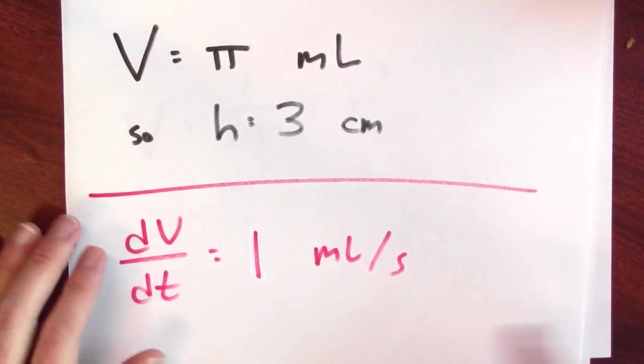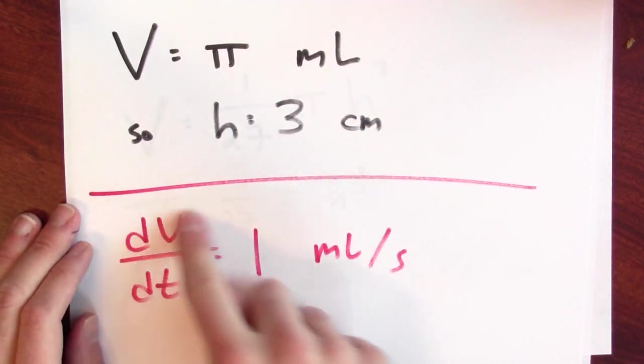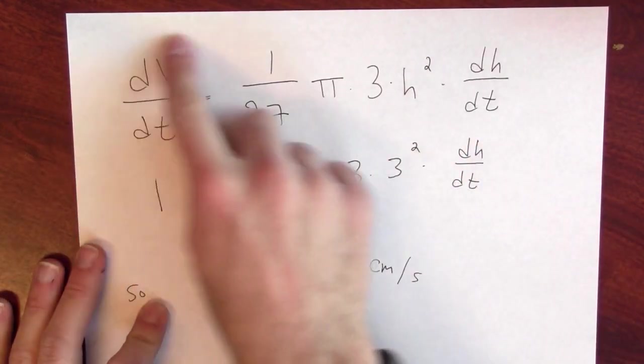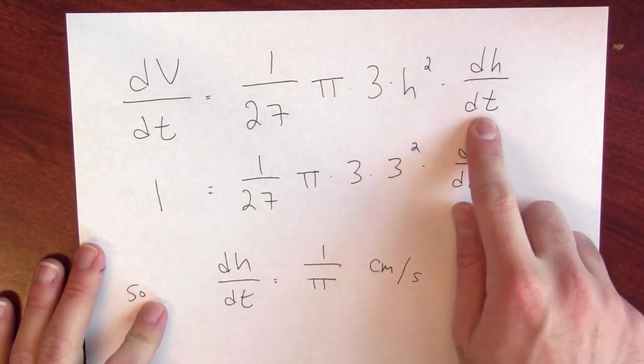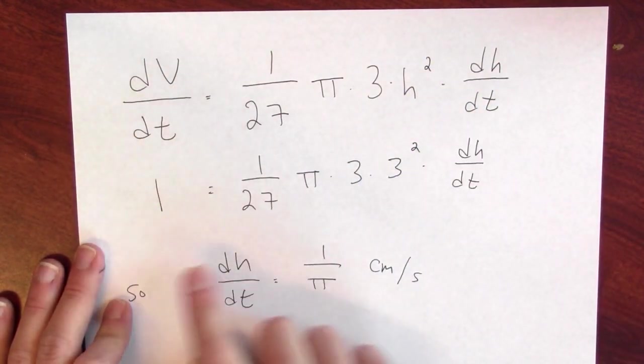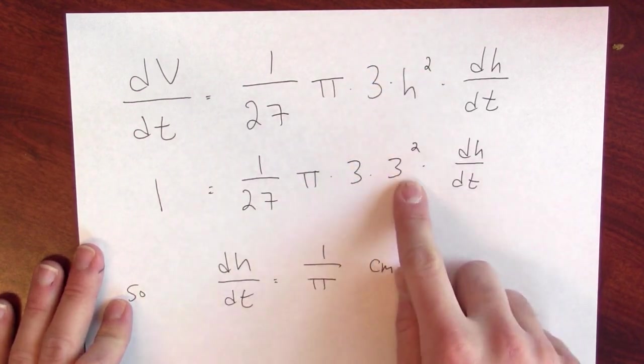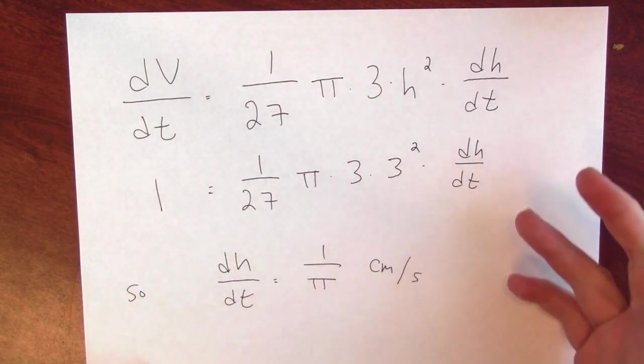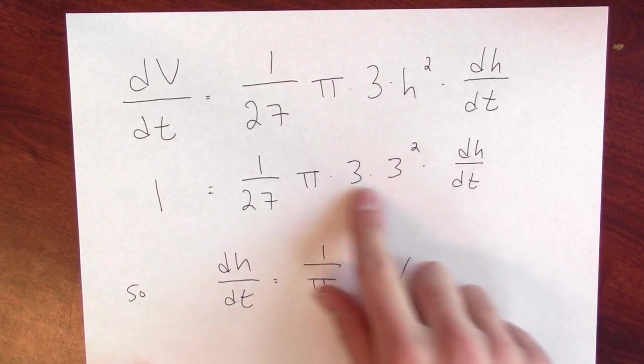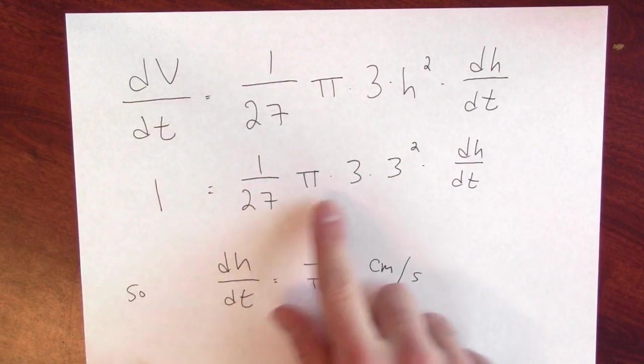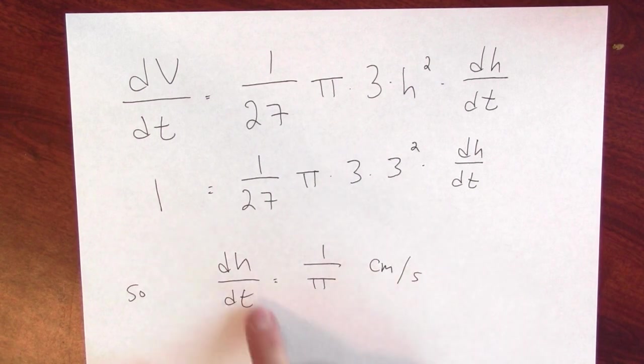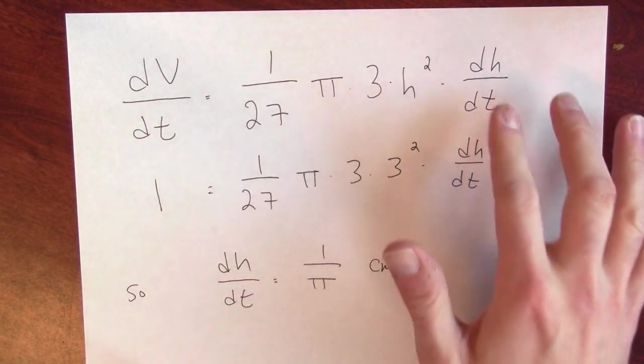Now, once I know that, I can take this fact and the fact that I'm told dV/dt and plug those in to the formula that relates dV/dt and dh/dt. Now, I'm interested in dh/dt, but I know that dV/dt is 1, and I know h at this particular moment is 3 centimeters. Now, all I've got to do is just solve this equation for dh/dt. And that's not so bad. The 3 times 3² is a 27, which cancels this 1/27. And then I divide both sides by π, and 1/π then is dh/dt. So now I know how quickly the water height is changing. It's changing at a rate of 1/π centimeters per second at this particular moment.